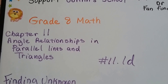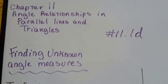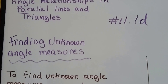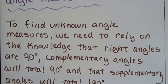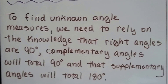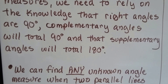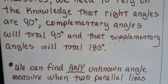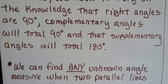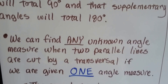Grade 8 math, number 11.1d. We're going to talk about finding unknown angle measures in this video. To find an unknown angle measure, we need to rely on the knowledge that right angles are 90 degrees, complementary angles will total 90 degrees, and supplementary angles will total 180 degrees.